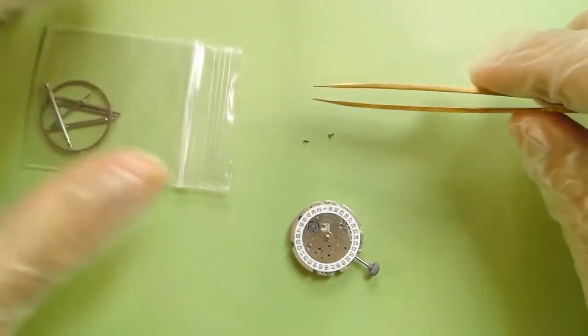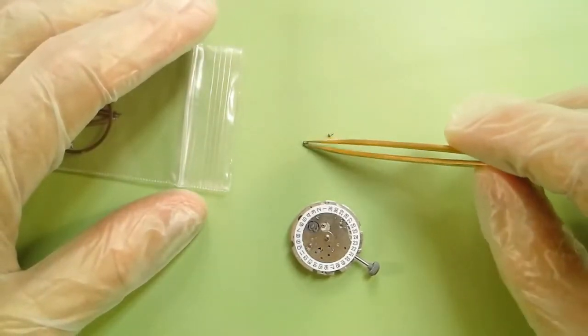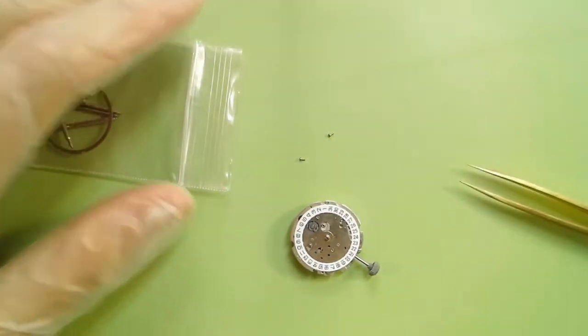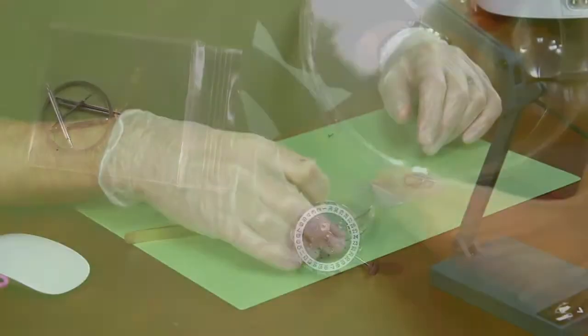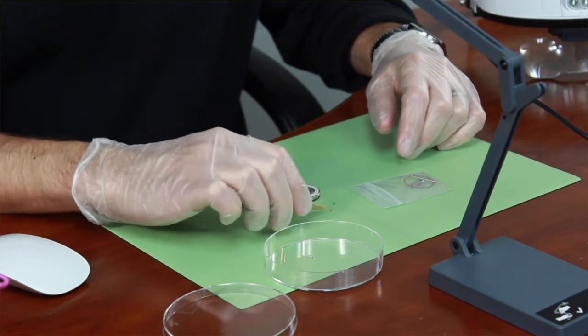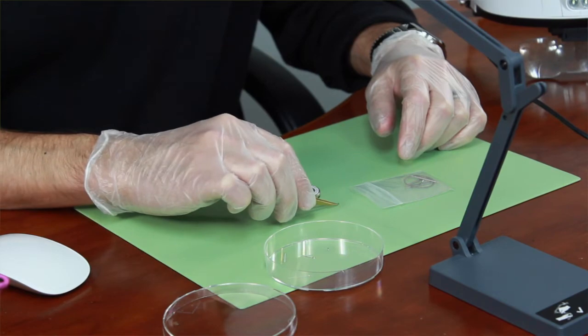So we're going to grab out these dial feet screws. I'm going to put them in one of the petri dishes, which is why we ship in petri dishes—because these are parts trays and these little parts are easy to lose. So I'm going to put these two little screws in the parts trays until we're ready to begin working with them.